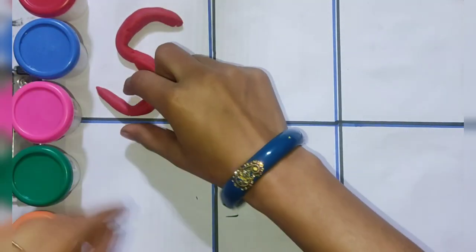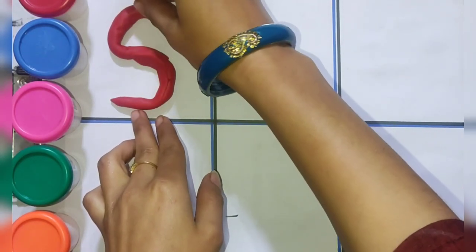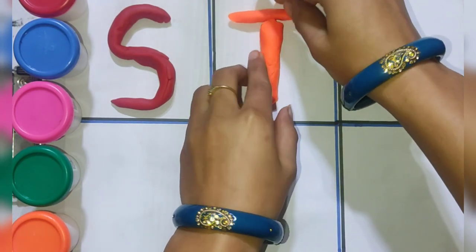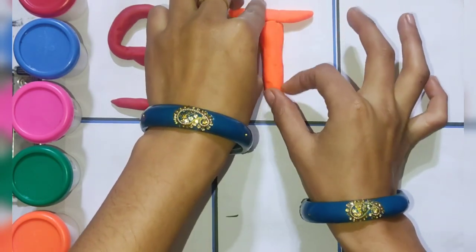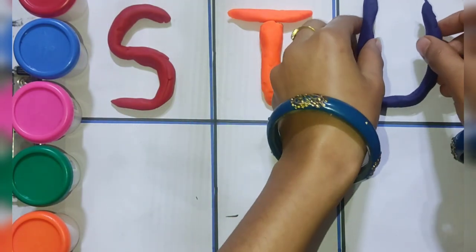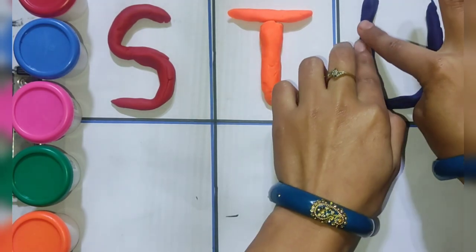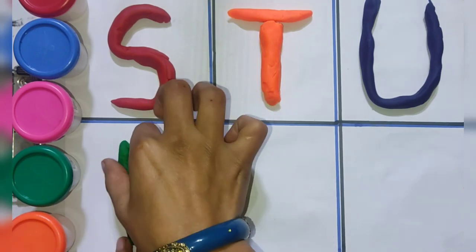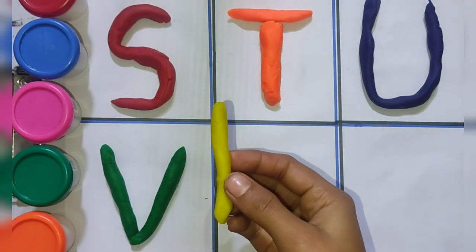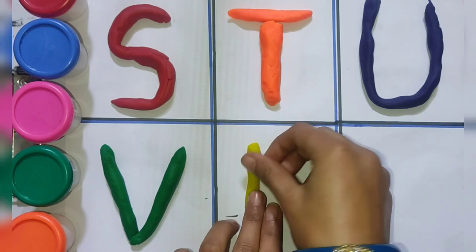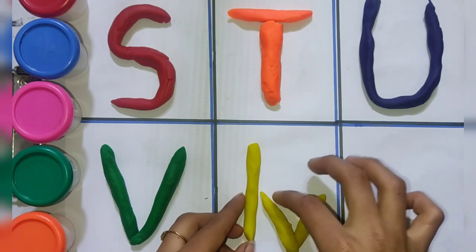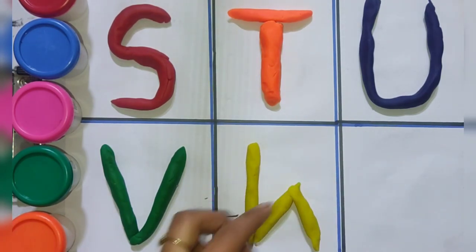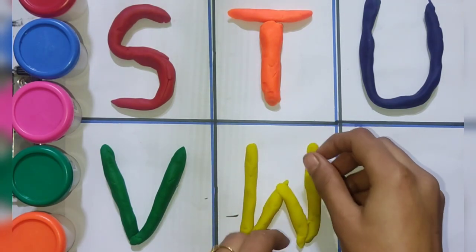Red color. S. S for sun. Orange color. T. T for trumpet. Blue color. U. U for unicorn. Green color. V. V for van. Yellow color.